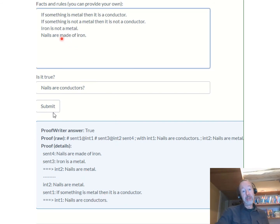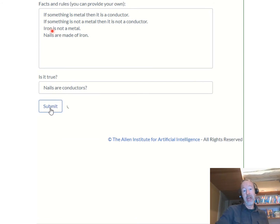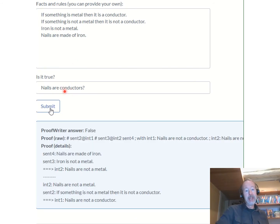I can change my situation to be a counterfactual situation where iron is not a metal, and let's repose the query. And again, the system reasons systematically with the rules to come up with the correct answer, now false, and also giving the proof of the answer.